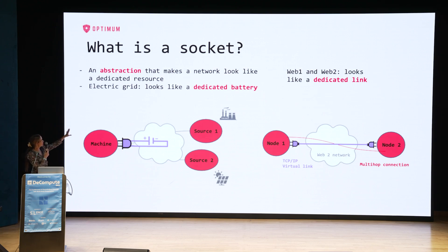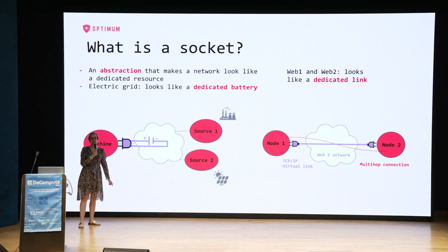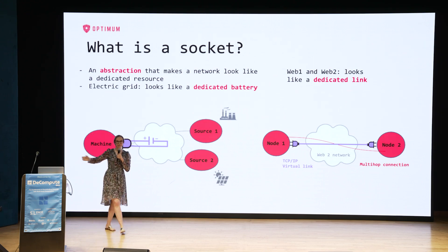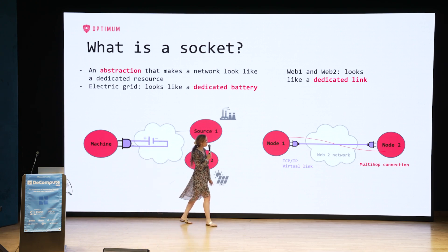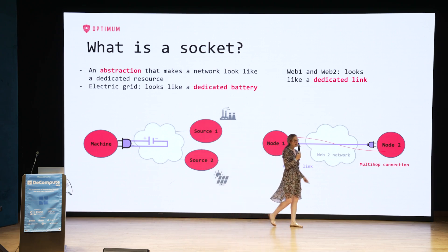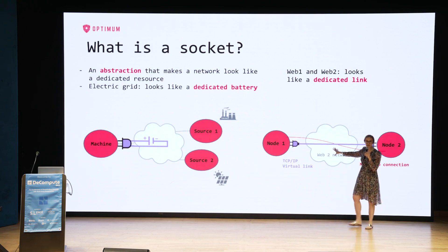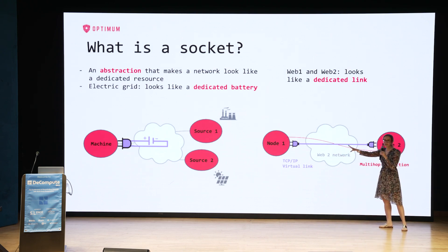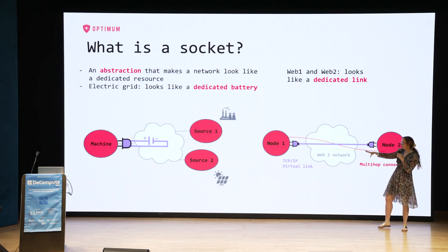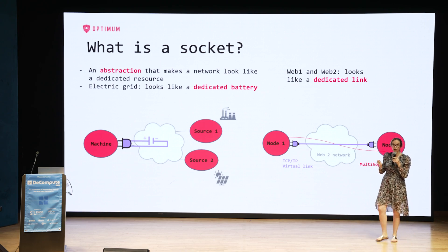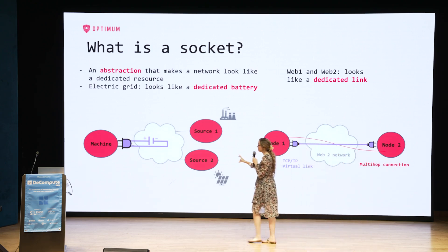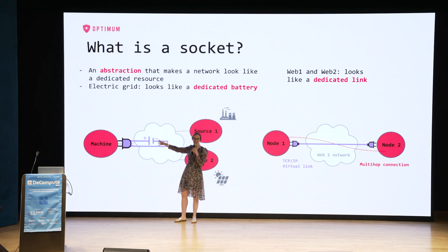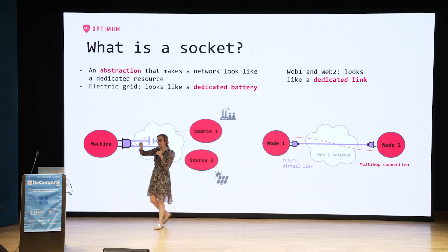It's an abstraction that makes a network look like a dedicated resource. In the electric grid, it's going to look to me like a dedicated battery — I can't tell whether there's a solar panel or a coal-fired plant. In Web 1 and Web 2, I have some messy multi-hop connection, but as far as I'm concerned, there's a dedicated link between one node and another node. That's what the socket gives. There's the abstraction, and behind it there has to be some technology to make the whole mess that is the cloud satisfy the emulation of that abstraction.